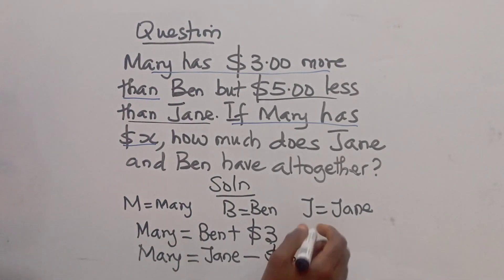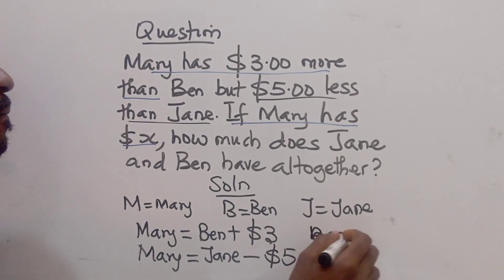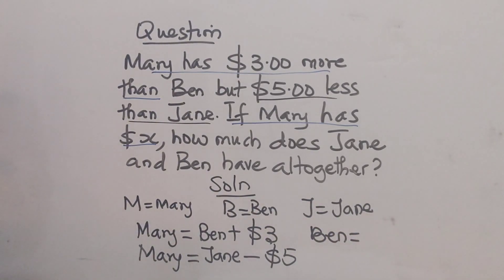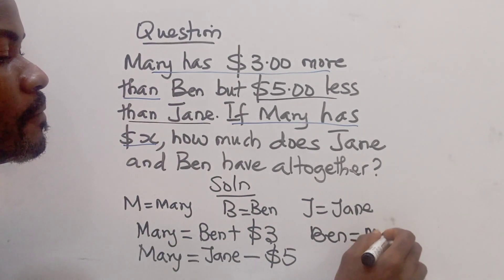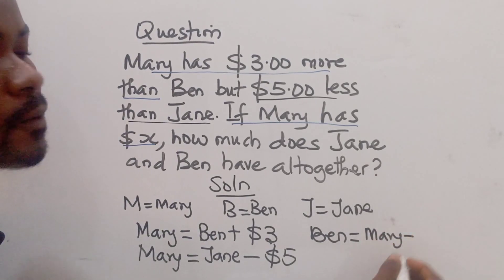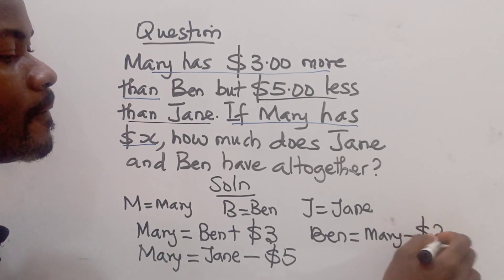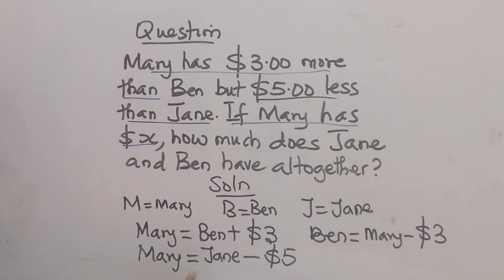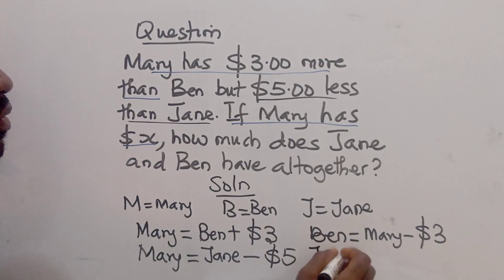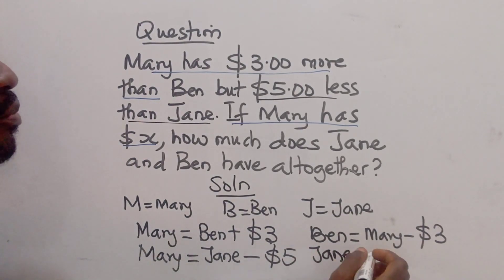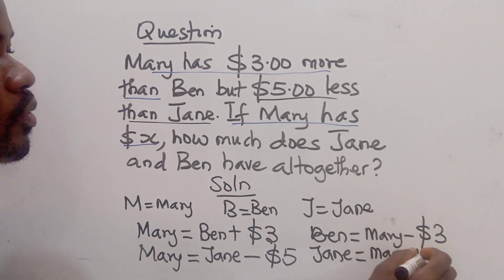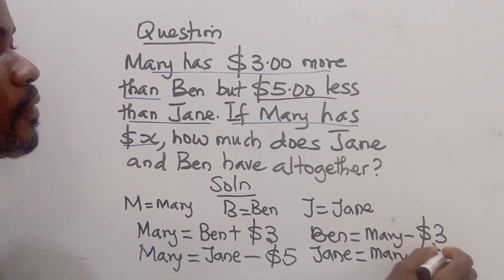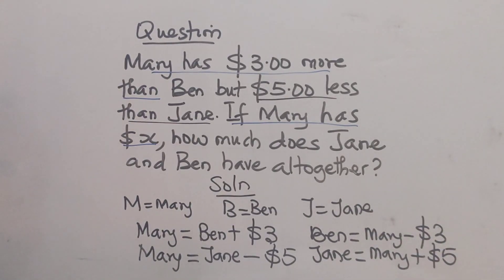Now if we make Ben the subject, it means Ben equals Mary minus three dollars. And if we make Jim the subject, Jim equals Mary plus five dollars.